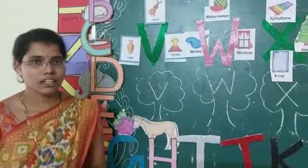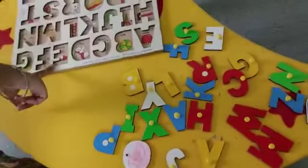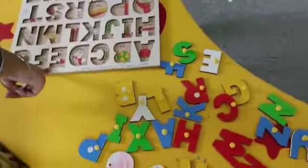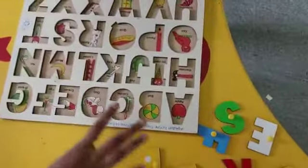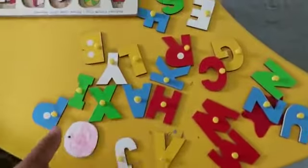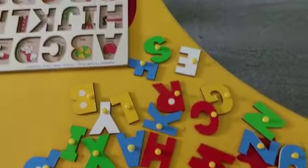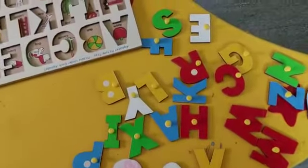So now we will play a game. Vineet, hi! Hi ma'am. Good. See Vineet, what is this? This is a puzzle board. I removed all the letters and mixed them all. Now I will say a letter. You have to identify the letter, say the letter sound, and place it on the puzzle board. Okay ma'am.